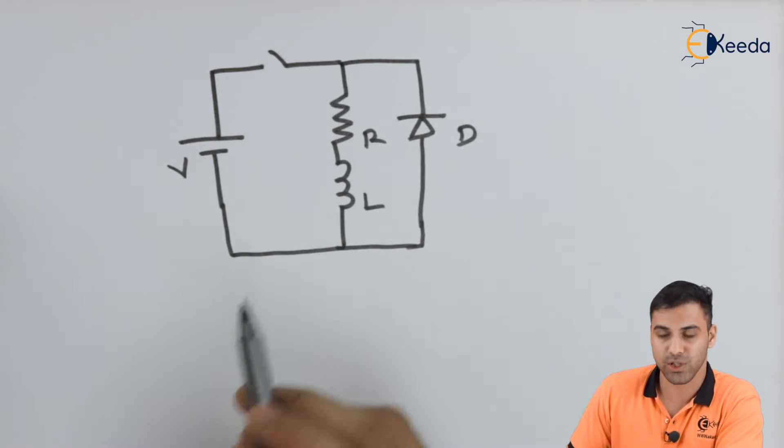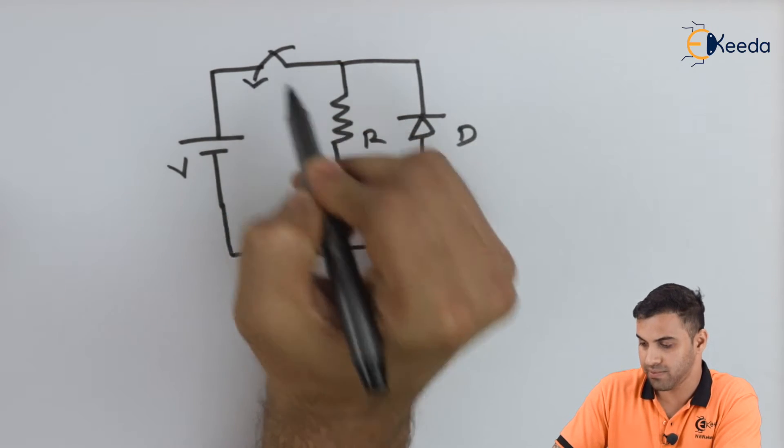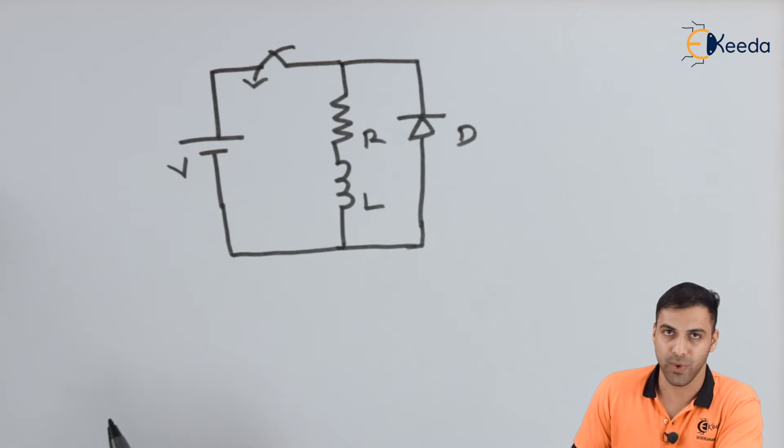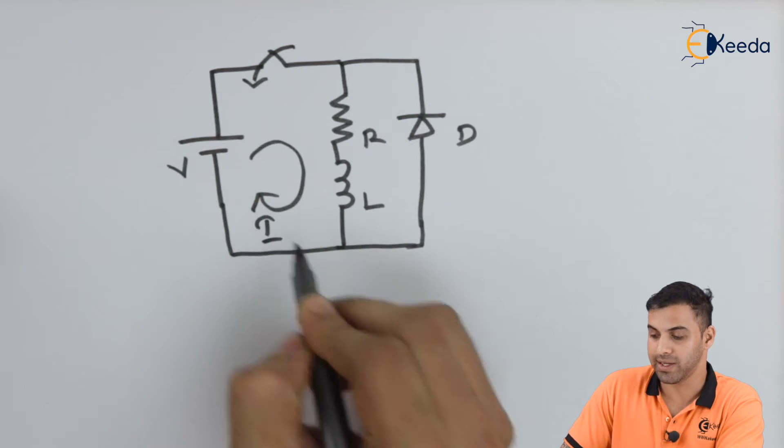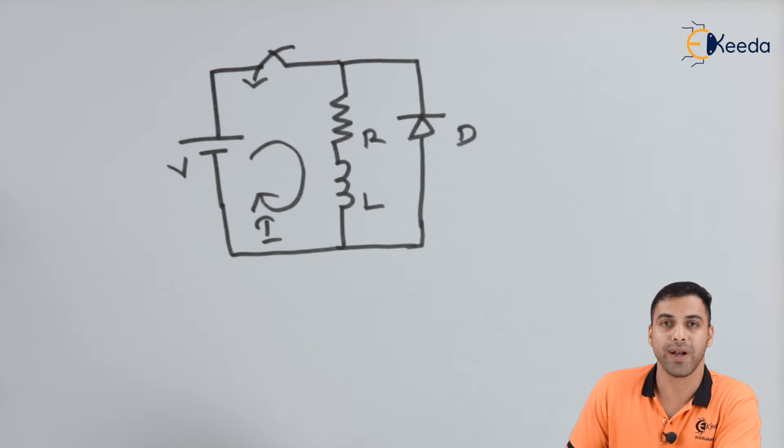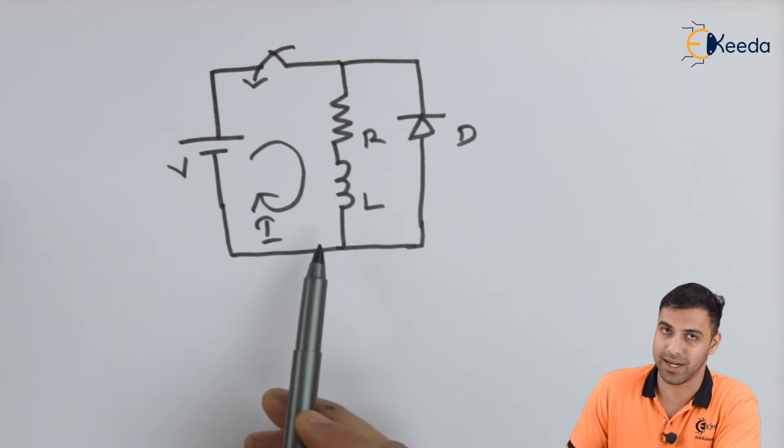Now, if I close the switch, the current starts flowing in the circuit. In this loop, let I be the current that is flowing through the circuit. Now friends, when the current starts flowing, the inductor gets charged.